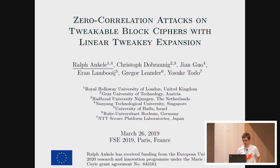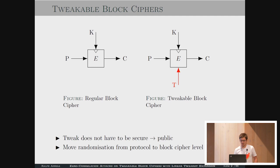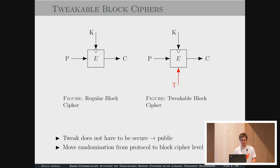Thanks for the introduction. This talk is on zero-correlation attacks of tweakable block ciphers with linear tweak expansion. Tweakable block ciphers, compared to normal regular block ciphers, add an additional tweak value. The tweak value doesn't have to be secure — it's a publicly available value — but it also gives the attacker the freedom to choose the value and use it in an attack. The goal is to move the randomization from protocol level to block cipher level using this tweak.